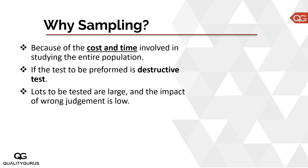Another case where you take a sample is when the lot is bigger and the impact of wrong judgment is low. If the impact of wrong judgment is high, you might end up doing 100% inspection. But if the impact is low, you take some samples, test them, and make your judgment. You know that you might make some mistakes because sampling is not 100% correct — it's not foolproof. You take some risk when you take a sample, and we will be talking about those risks and errors in this section.